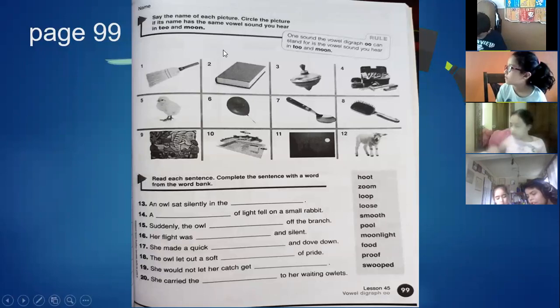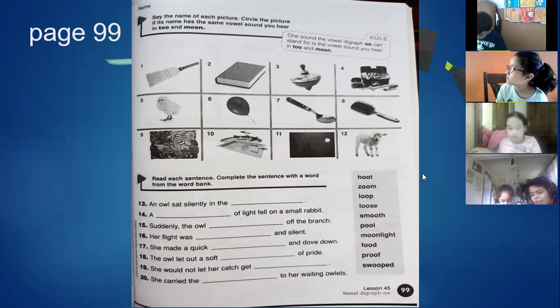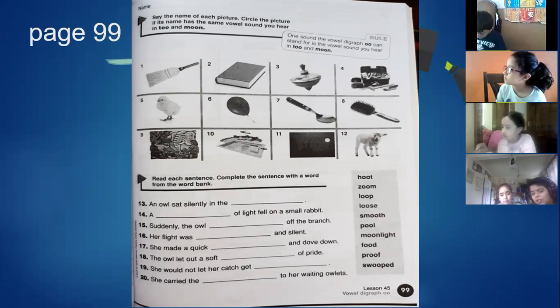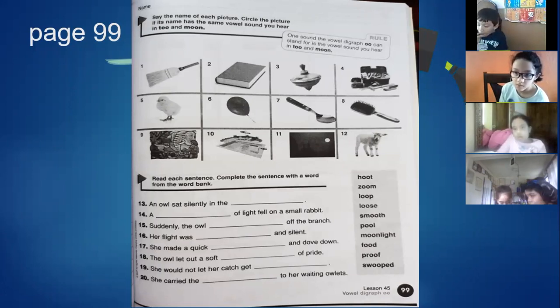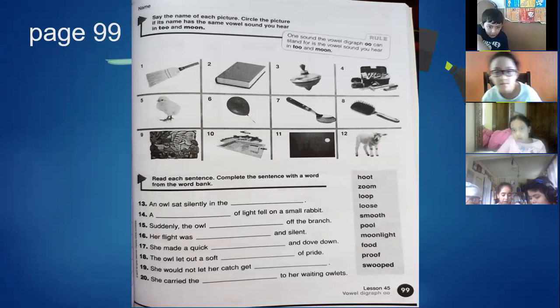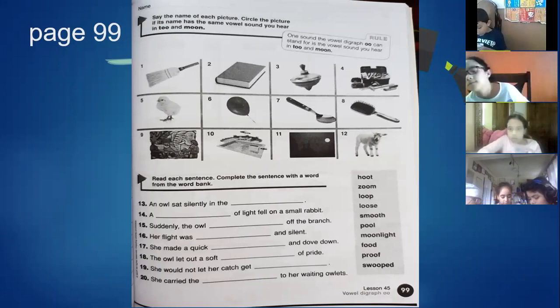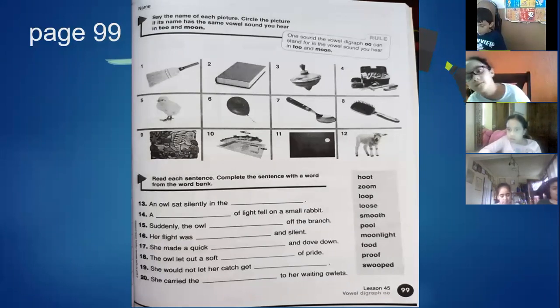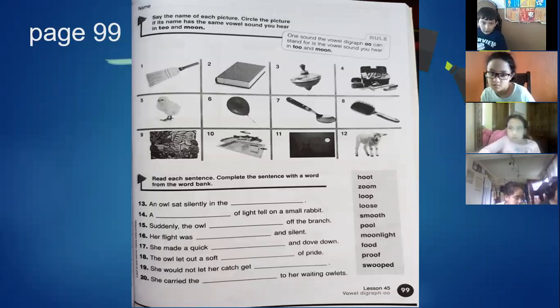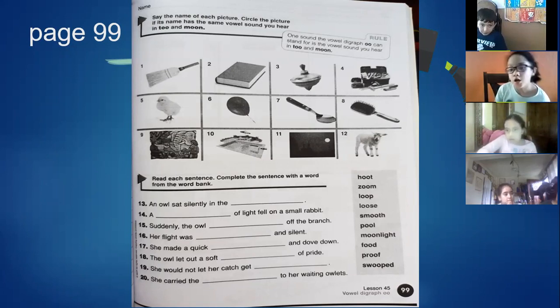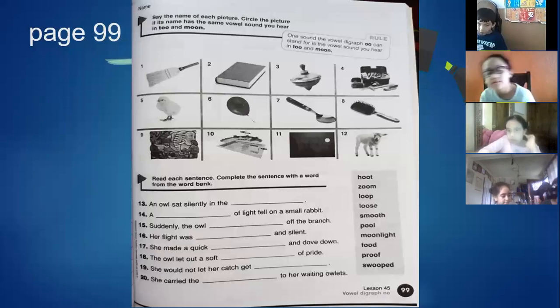Now vowel digraph O-O. In a vowel digraph, two vowels together can make a long or a short sound. Example. Books. Or the pool. Page 99. Say the name of each picture. Circle the picture if its name has the same vowel sound you hear in two and moon. Two and moon. Those have difference. Moon, moon. Two, two.